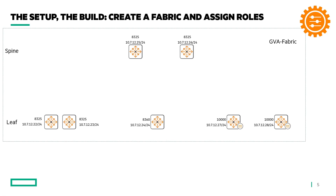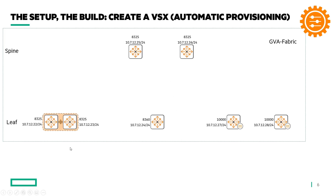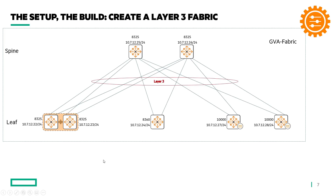After discovering the switches, we'll create a fabric and assign the roles of those switches — so the bottom switches will be leaf switches and the two 8325s at the top will be spine switches. Next is to create a VSX pair of the two 8325s. We won't be using any CLI — everything we do is done through AFC using the workflows available in AFC.